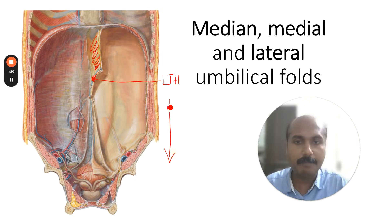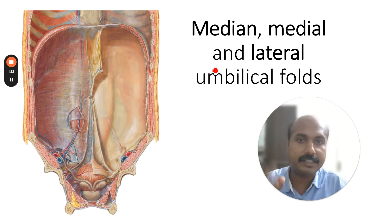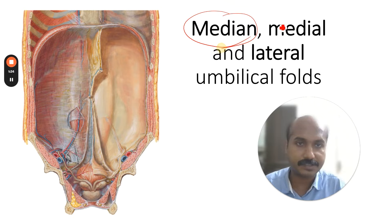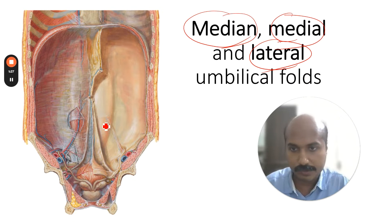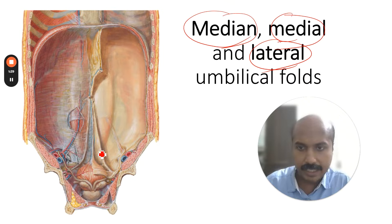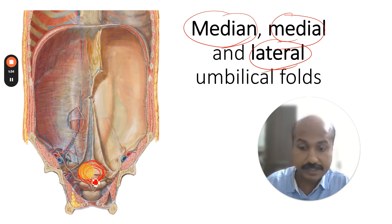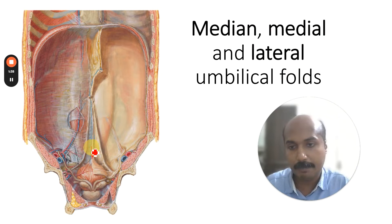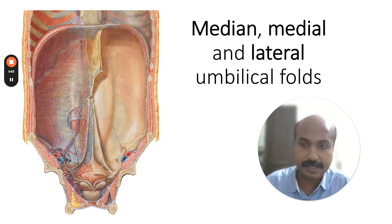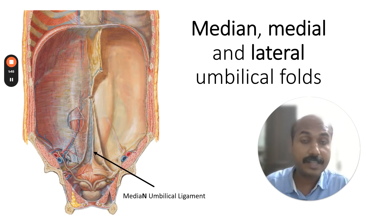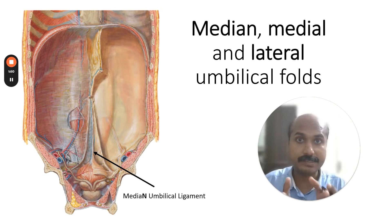Below the umbilicus is the infra-umbilical region, and that is exactly where you can see the three structures: the median, medial, and lateral umbilical folds. In the midline, a cord connects the pelvic viscera — specifically the urinary bladder — to the umbilicus. This structure is known as the median umbilical ligament.